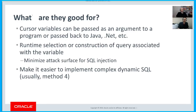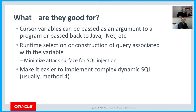What are cursor variables good for? First, cursor variables can be passed as arguments to other programs. You can open a cursor variable in one block of code, pass it to another program that does the fetching, and maybe back to the original program to do the closing. You can also pass back a cursor variable to a host environment — a non-PL/SQL environment like a Java program or a .NET program — so those programs can fetch from cursor variables into their own objects and process the data.